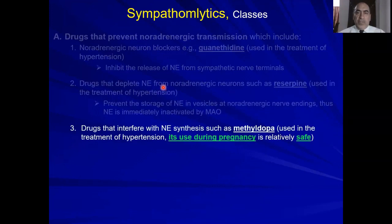Then we talked about alpha-methyl-dopa, the drug that inhibits the synthesis of norepinephrine — specifically the step from DOPA to dopamine. Alpha-methyl-dopa is one of the safest drugs used in pregnancy. All of these are antihypertensive drugs.